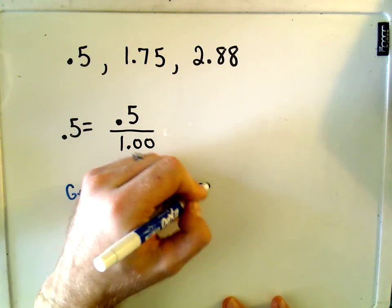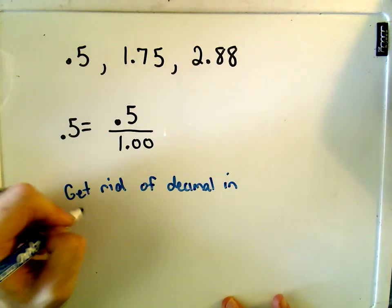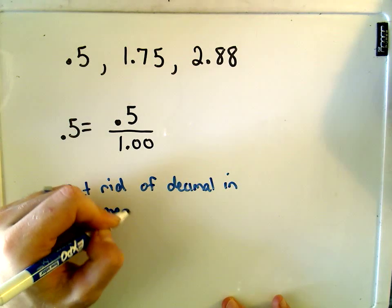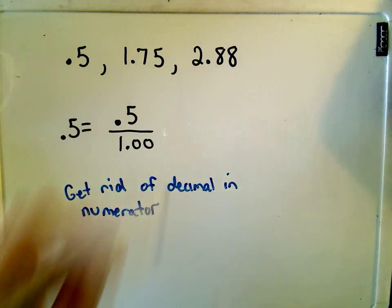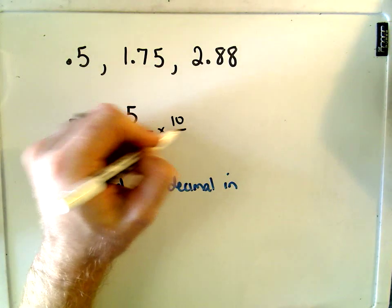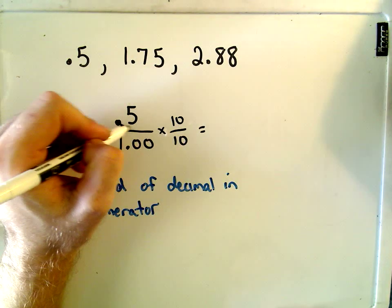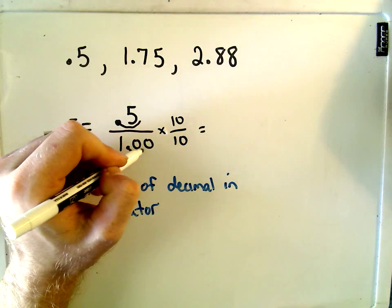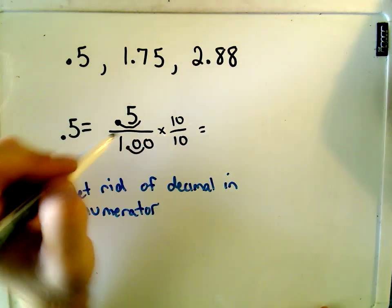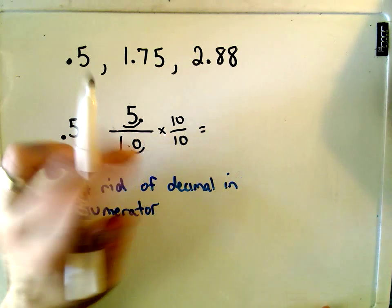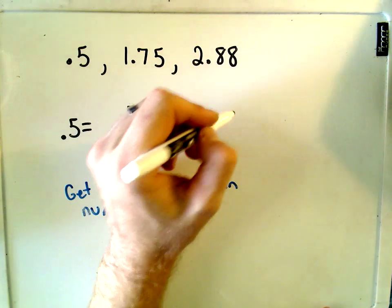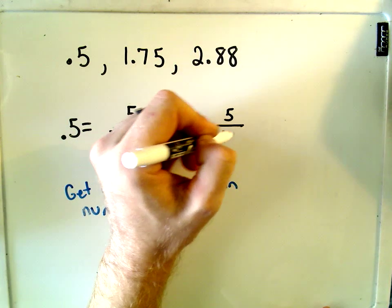So I'm going to get rid of the decimal in the numerator. To do that, if I multiply the top by 10 and the bottom by 10, all I'm really doing is moving the decimal one place. That means I would have to move it one place in the denominator. So, if I move it one place in both, I'm going to be left with the number 5 over 10.